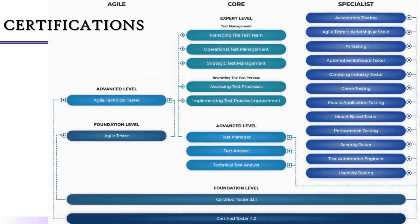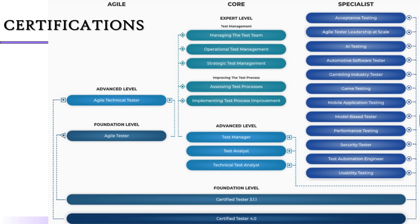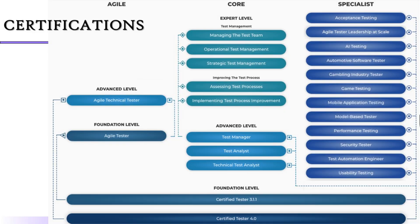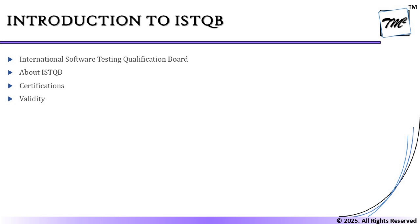There are plenty of certifications available. The first prerequisite is ISTQB Foundation, and after that you have a pathway to Agile certification or specialist certifications. Specialists are related to profile and domain — for example, performance tester, security tester, automation tester, usability tester — or industry-specific certifications like AI, automotive, gambling, and game testing. Two new certifications have recently been added: Scaled Agile and Generative AI, which is the newest addition to the specialist track.